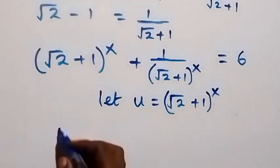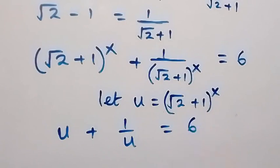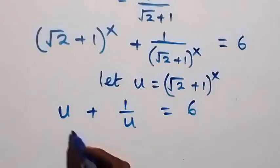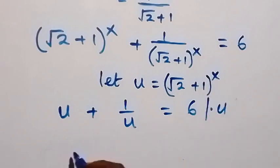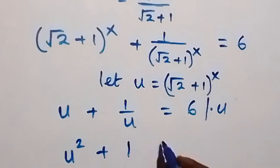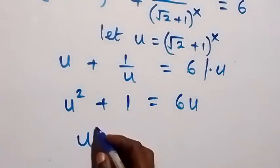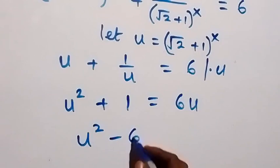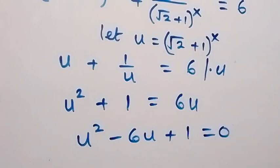This becomes u plus 1 over u, now equals to 6. Then let's clear this fraction and multiply through by u: this becomes u times u, which is u squared, then plus 1 equals to 6u. Then bring everything to one side to form a quadratic equation: u squared minus 6u plus 1 equals to 0.